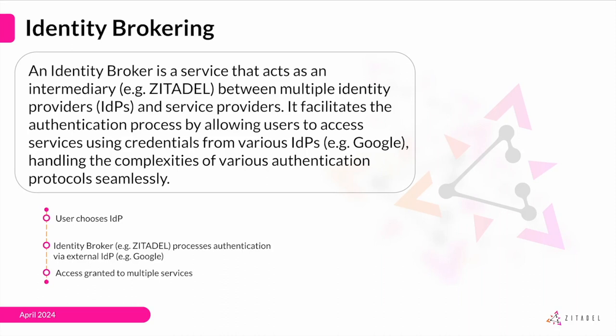In identity brokering, users are presented with the option to select an identity provider of their choice. They can either create a new account with the broker or log in using existing credentials from well-known IDPs such as Google, Facebook, GitHub, etc. If they opt for the latter, the broker will redirect the user to the chosen IDP for authentication. The broker then manages user access based on whether the external authentication is successful or not.